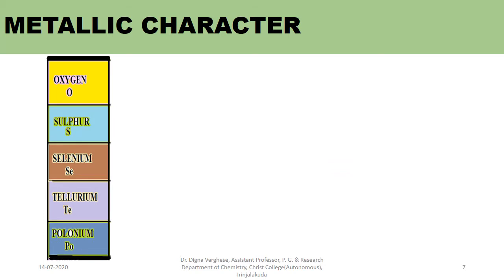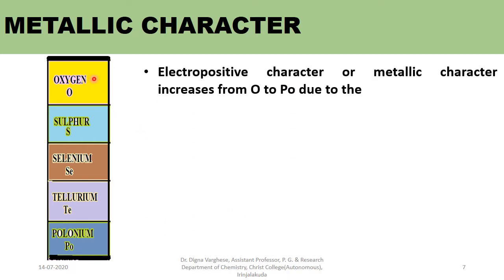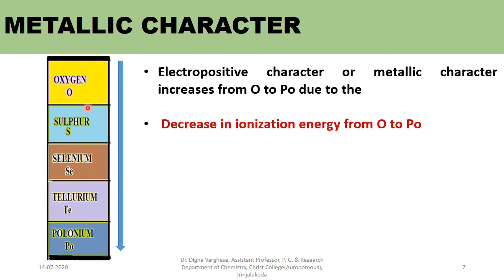Metallic character, or electropositive character, means an atom has a tendency to lose electrons and form a cation. In the oxygen family, electropositive character increases from oxygen to polonium. This is due to the decrease in ionization energy from oxygen to polonium — oxygen's ionization energy is 1310 kJ/mol and polonium's is about 813 kJ/mol, so polonium has the maximum tendency to lose electrons and form a cation. The most metallic element in the oxygen family is polonium, and the least metallic is oxygen.